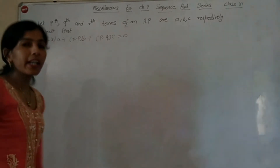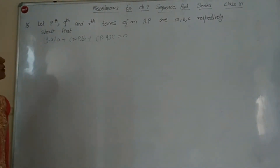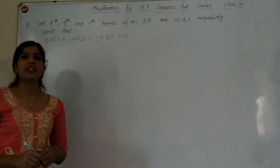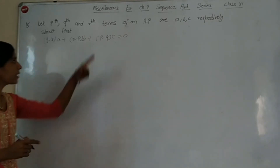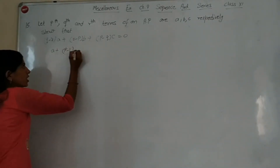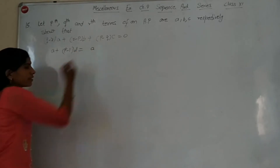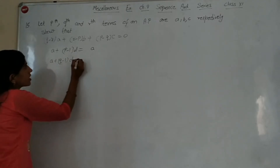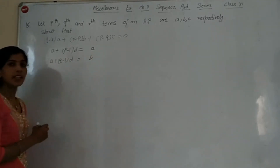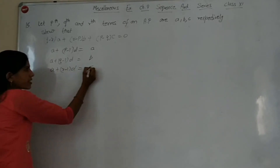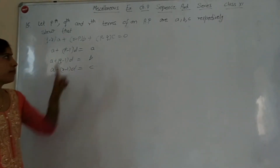Question number 15: Let the Pth, Qth, and Rth terms of an AP be A, B, C respectively. So the Pth term is A + (P-1)d = A, the Qth term is A + (Q-1)d = B, and the Rth term is A + (R-1)d = C.